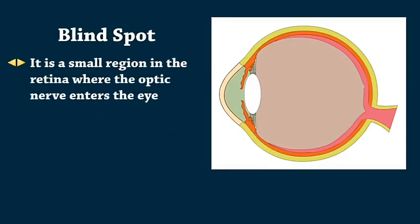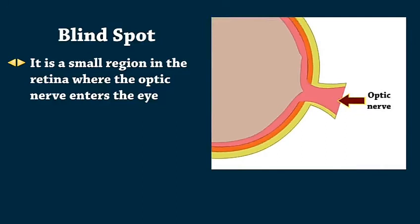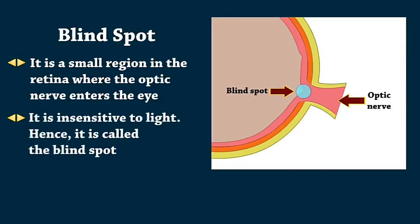Blindspot is a small region in the retina where the optic nerve enters the eye. It is insensitive to light. Hence, it is called the Blindspot.